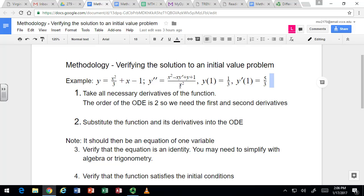Now, the differential equation we're trying to see if it's a solution to is y double prime equals x squared minus xy prime plus y plus 1 all over x squared. And then we have two initial conditions since it's a second order ODE. The function should be one third at 1, and the derivative should be five thirds at 1.